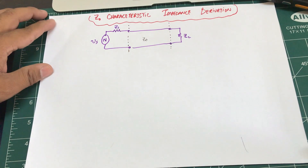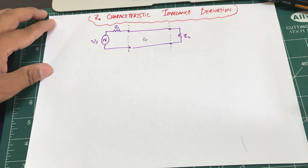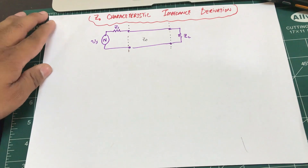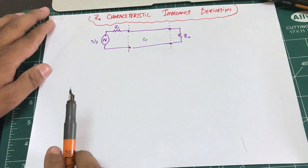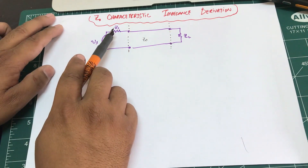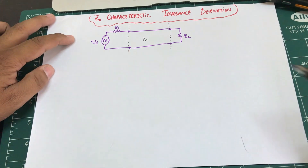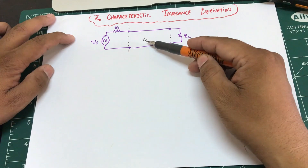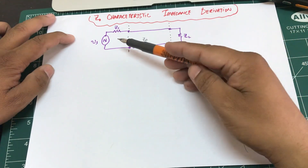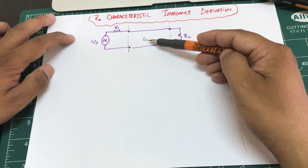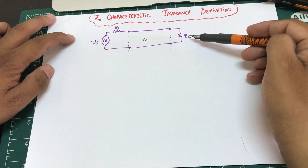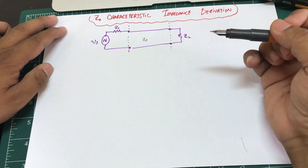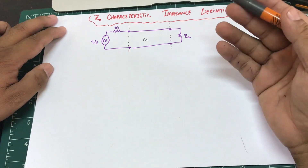Welcome back. Let's derive the characteristic impedance of any transmission line — in our case, a two-conductor model. So Zs is your source impedance, Vs is your source voltage, connected to some load ZL with the help of a transmission line Z0. Our circuit has a source, a transmission line with impedance Z0, which we are trying to derive, and a load impedance connected to the transmission line.